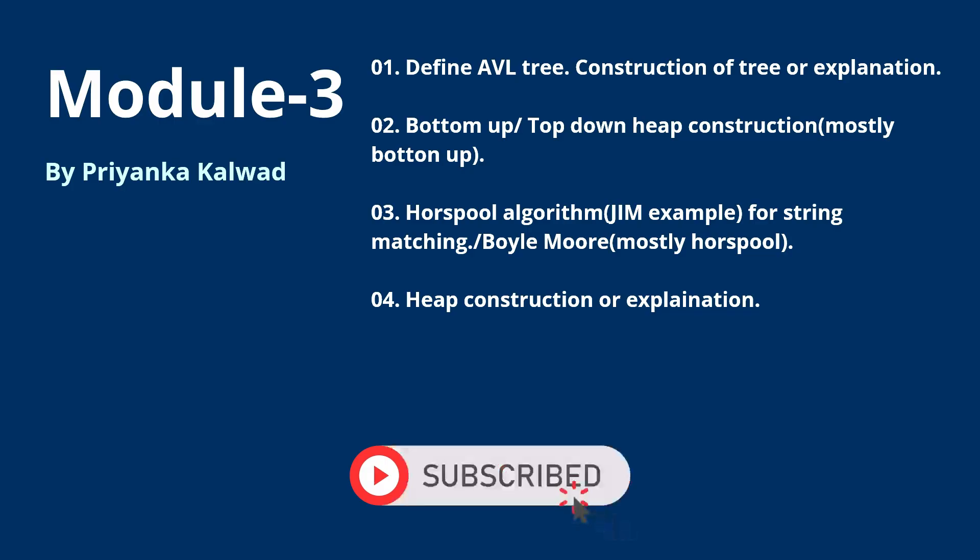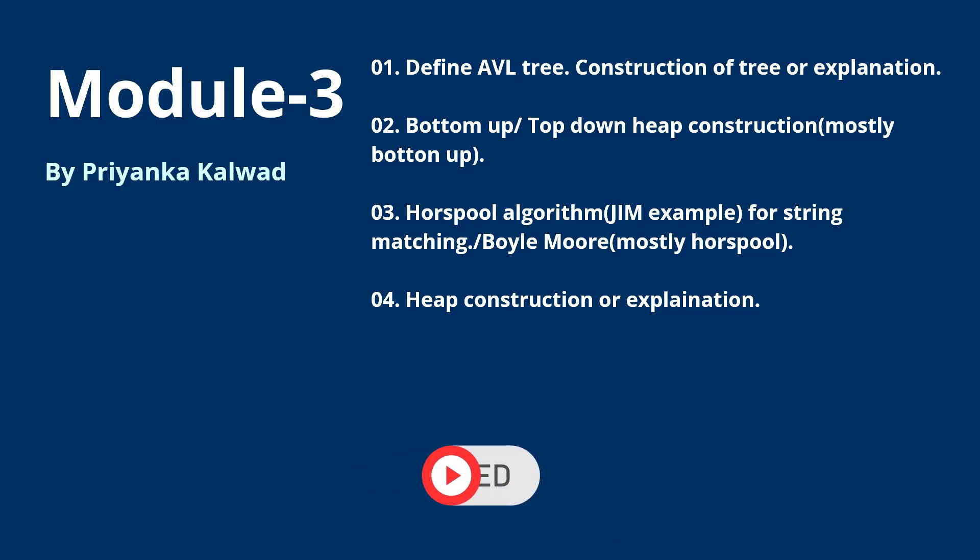Next is Module 3, where I have four questions. The first is: define AVL tree — they either ask you to construct the tree or explain it. The second is bottom-up or top-down heap construction; mostly you will get bottom-up. The third is the Horspool algorithm — most probably you will get Horspool algorithm questions, and the example from your textbook about 'Jim saw the barber' is important. The fourth is heap construction or its explanation. If you are focusing only on passing, please do the second and third questions.